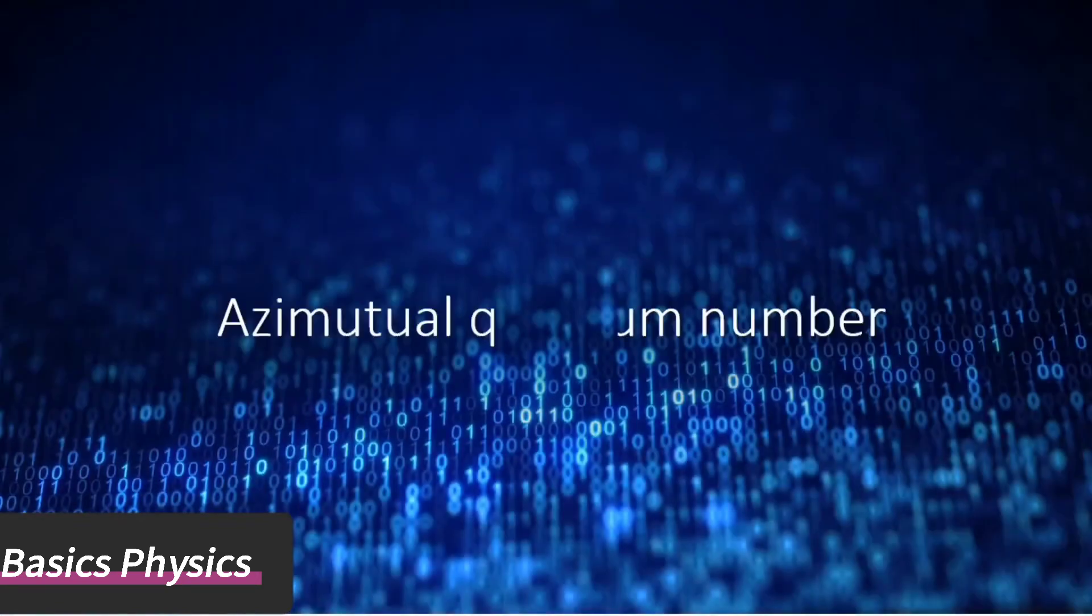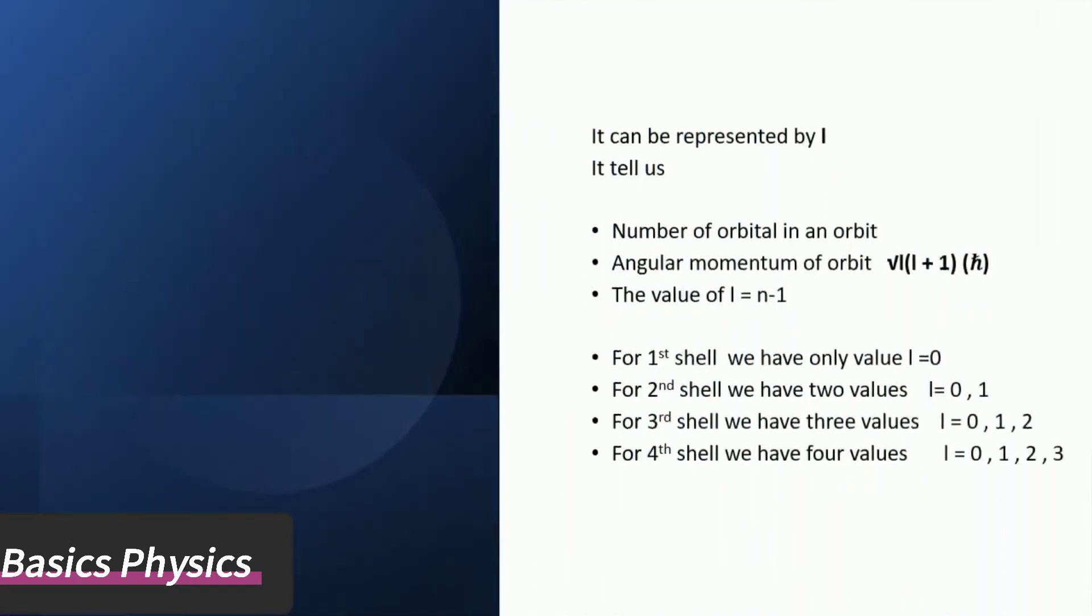Azimuthal quantum number can be represented by l. It tells us the number of orbitals in an orbit and angular momentum of orbit equal to square root of l into l plus 1 into h cut. The value of l is n minus 1. For the first shell we have only value l equals 0, which has only one s orbital.